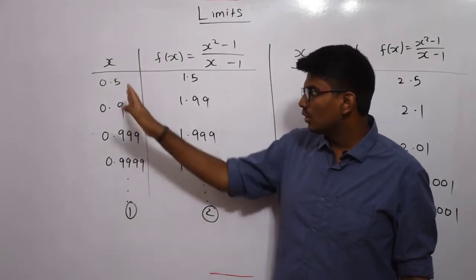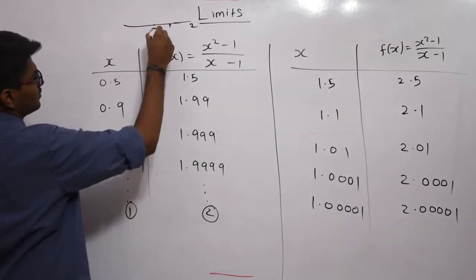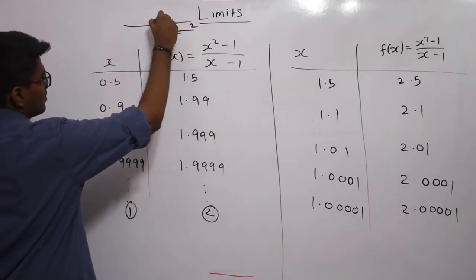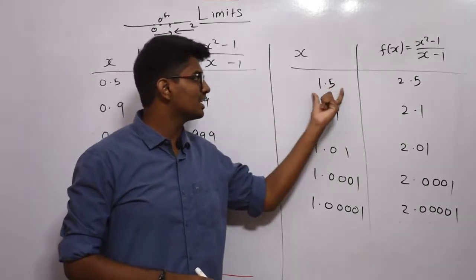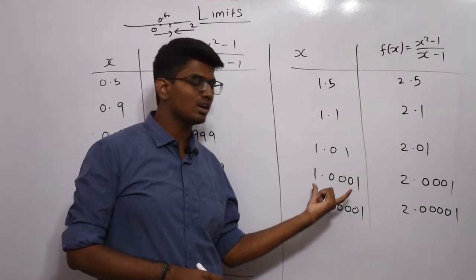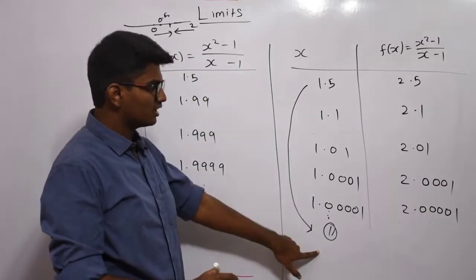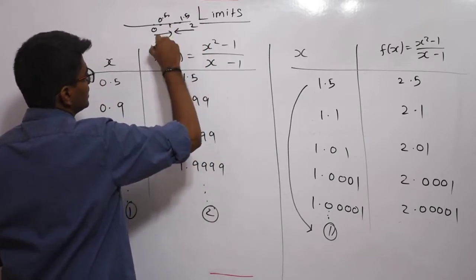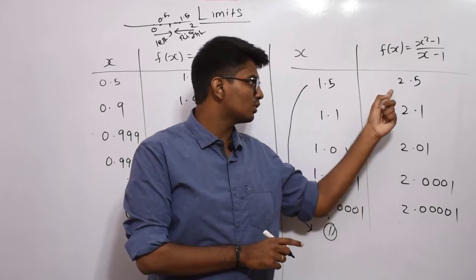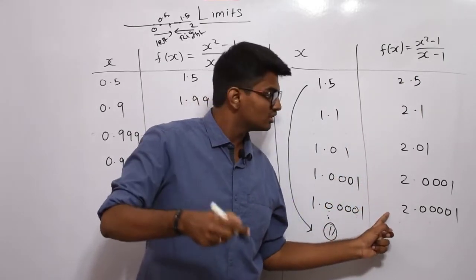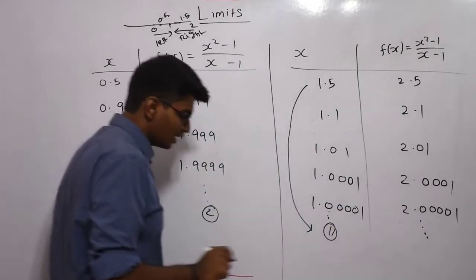I did not yet approach from the right hand side. Now for the right hand side: x goes 1.5→1.1→1.01→1.001→1.0001, approaching towards 1 from the right. The corresponding f(x) values are 2.5→2.1→2.01→2.001→2.0001. My f(x) is also approaching towards 2. So from the right side also, as x approaches closer and closer to 1, f(x) approaches closer to 2.